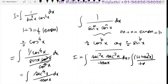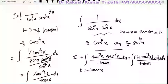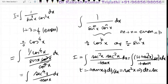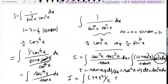The integral becomes (1 + tan²x) / tan x · sec²x dx. Since the derivative of tan x is sec²x, we let t = tan x, so dt = sec²x dx. Substituting, the integral I becomes the integral of (1 + t²) / t dt.